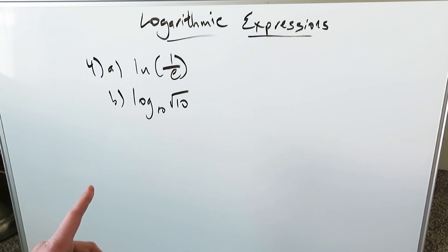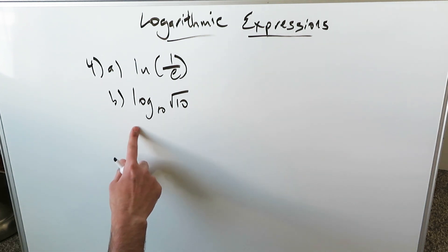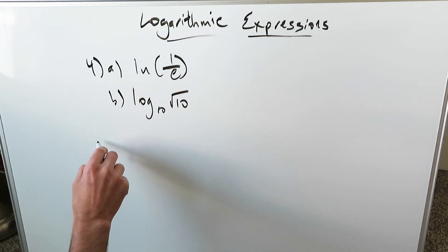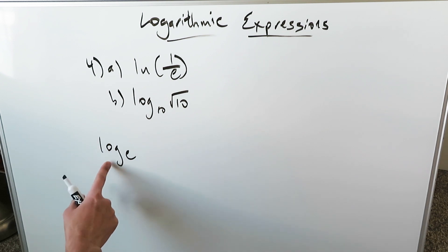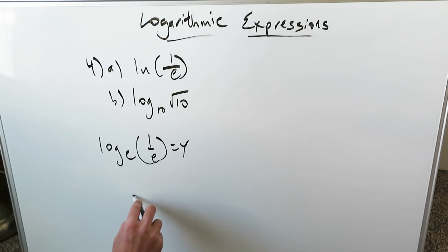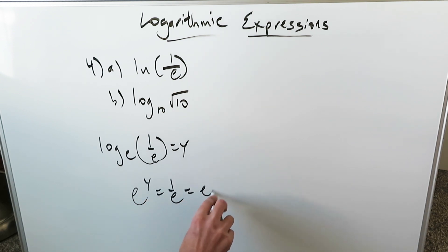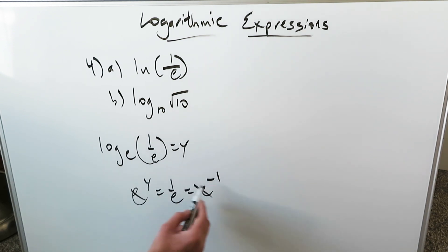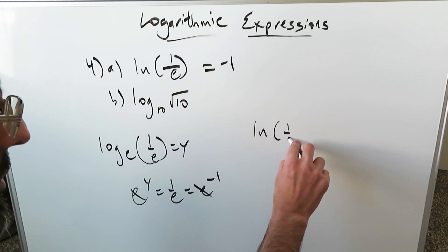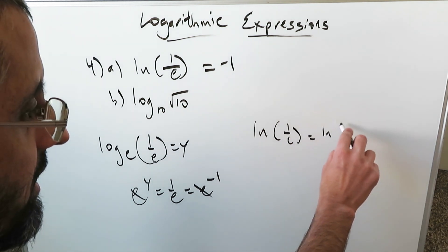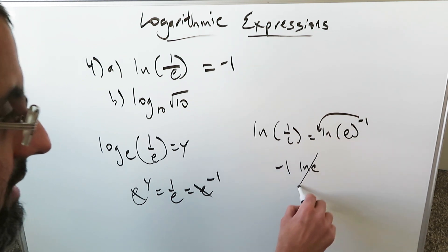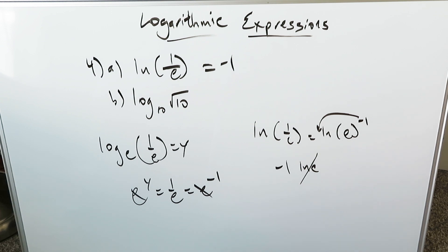Question number 4, A and B. We have natural log of 1/E and log base 10 of root 10. You can do those conversions — I'll show you one way. Natural log is equal to log base E. I have log base E of 1/E equals Y. E to the Y is equal to 1 over E, which equals E to the power of minus 1. These cancel out — Y equals minus 1. But the easier way: natural log of 1/E equals natural log of E to the minus 1. Transport the exponent: minus 1 times natural log E. Since natural log E equals 1, the result is minus 1.